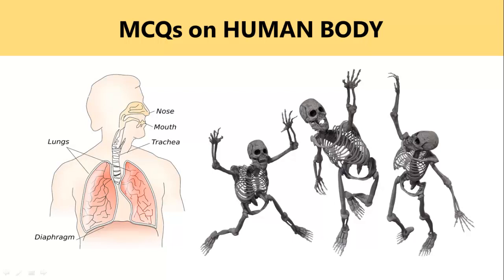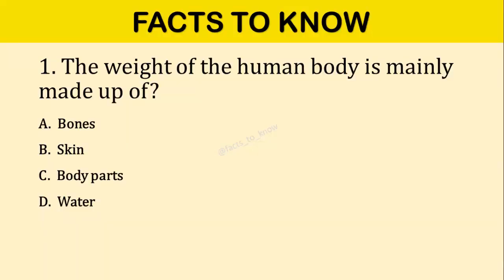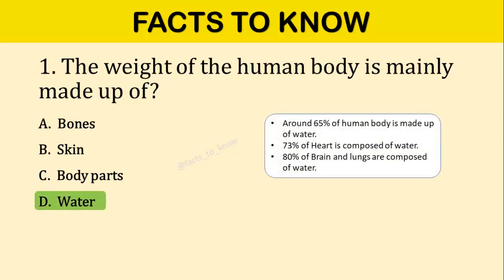Welcome to my channel Facts to Know — MCQs on human body. Question number one: The weight of the human body is mainly made up of? The correct answer is option D: Water. Around 65% of the human body is made up of water.